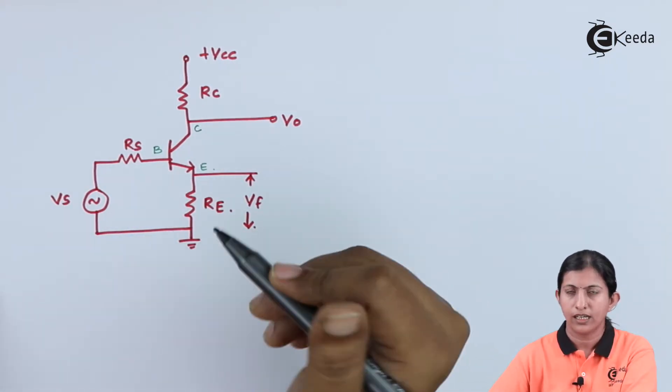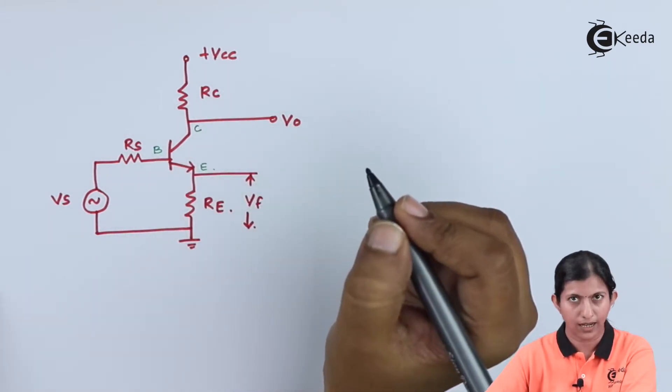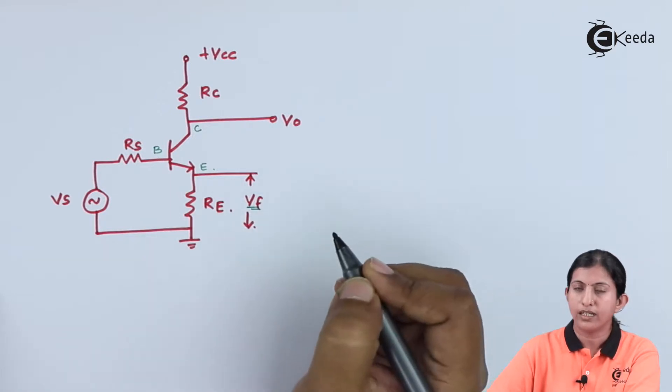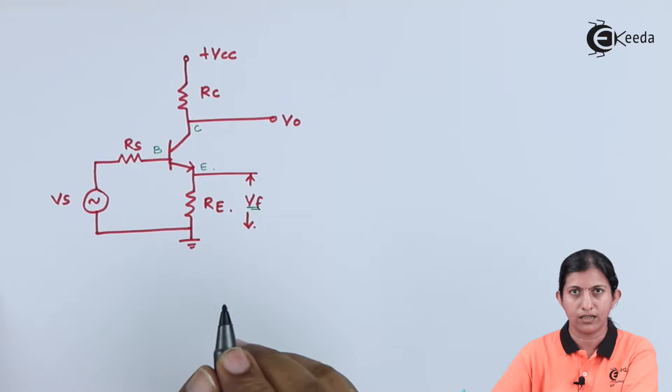Now, in this case the output voltage is taken across the collector terminal and the feedback voltage Vf is taken across the emitter resistor.